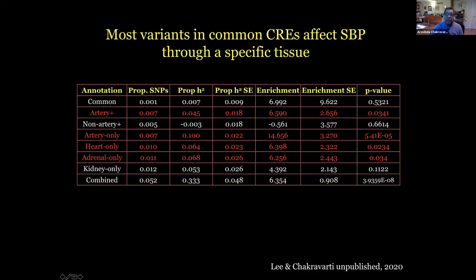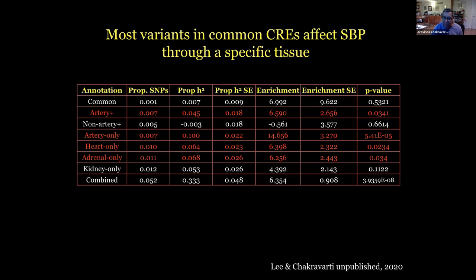This is summarized here. It shows fractions of SNPs — less than 1% in each of these cases. Overall, using about 5% of the SNPs rather than 23%, we can explain about a third of the heritability, with fractional contributions that are highly significant, of which the arterial component is the most significant. Heart only and adrenal only contribute, but it's much less significant. It suggests that much of systolic blood pressure heritability, at least as estimated here, is likely through an endothelial component — not a radically new idea, even though geneticists have said most of the evidence is through the renal system.